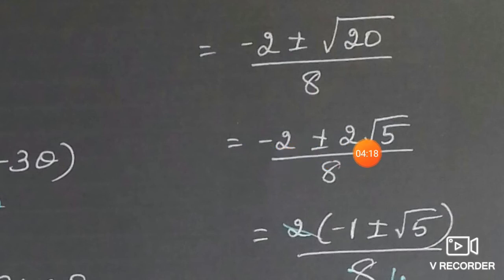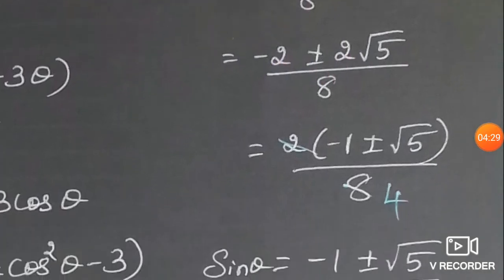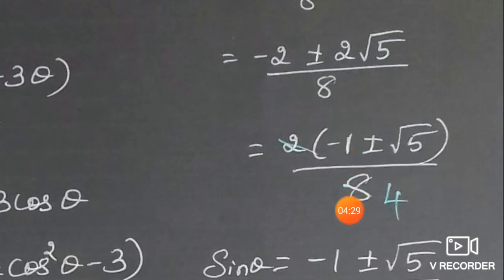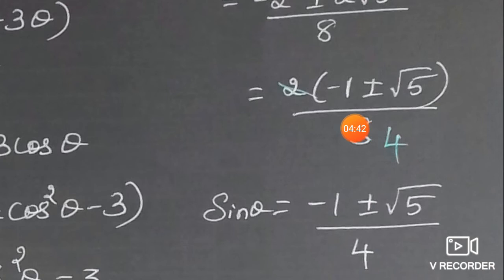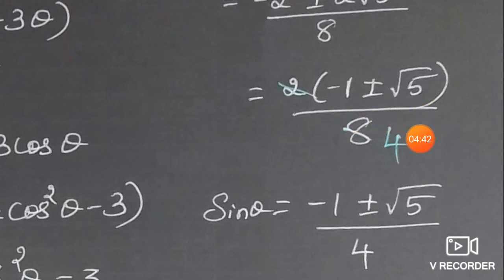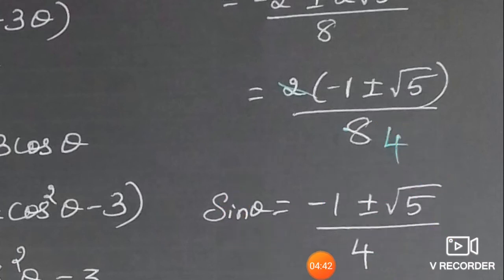Factor out 2 from the numerator: 2(−1 ± √5) / 8 = (−1 ± √5) / 4. So we have two values: sin θ = (−1 + √5) / 4 or sin θ = (−1 − √5) / 4.